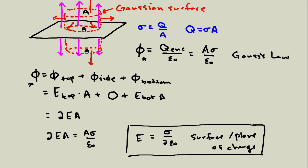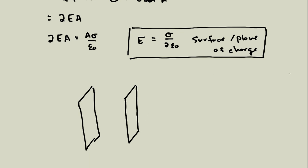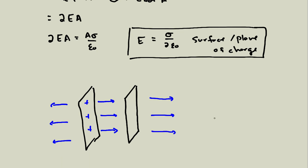This result looks really similar to one we saw before — the capacitor. In the case of a capacitor, we had two parallel planes of charge, essentially infinite in extent. If I have positive charges on one plane, the electric field from those points outward on both sides. Interestingly, the electric field doesn't depend on distance, so it continues in the same direction no matter how far away we go. That's a bit weird, but the plane is infinite, so maybe not so surprising.